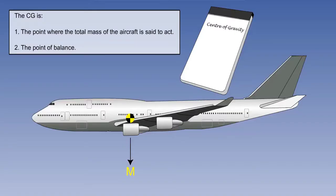It is vitally important to understand, from the beginning, the basic fact that the force of gravity will act on the total mass of an aeroplane in a vertically downward manner, both in the air and on the ground. The point through which the mass acts is called the centre of gravity. It may be referred to as the point of balance.